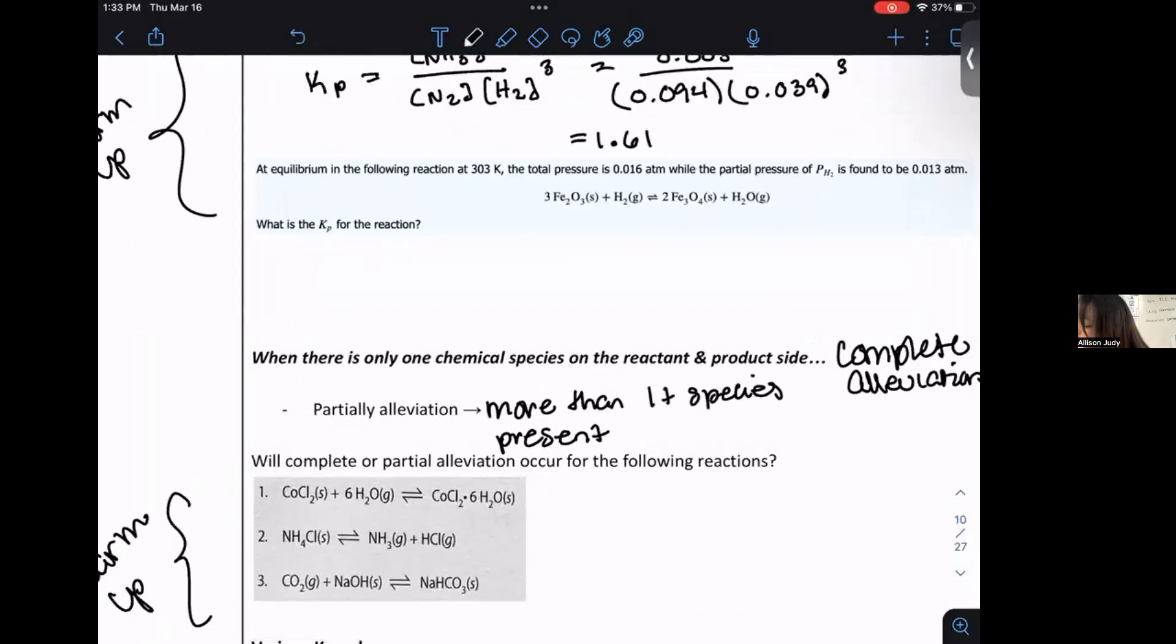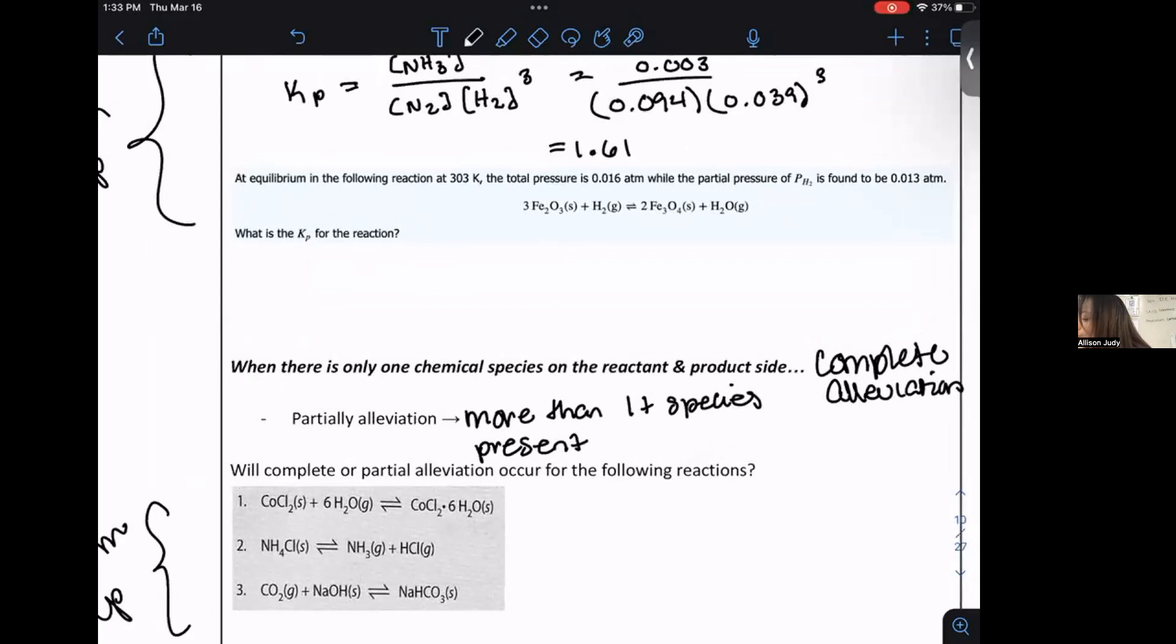Okay, so for the next one, you're going to have to first, you were told that at equilibrium, you have this temperature, you have the total pressure, and you have the partial pressure of one of them. Now, automatically, what you should notice in the reaction is we will not include the solid at all. So what we care about is the pressures of just H2 and H2O. Now we have the total pressure. So what we need to figure out, and we're given the partial pressure of H2. So that means that the pressure of H2O is going to be equal to the total pressure minus the contribution of H2, which is equal to 0.016 minus 0.013, which gives us 0.003.